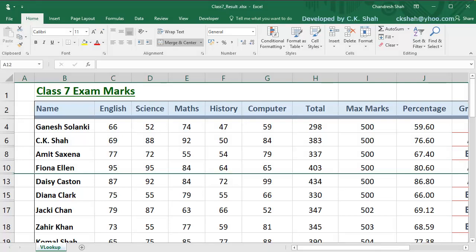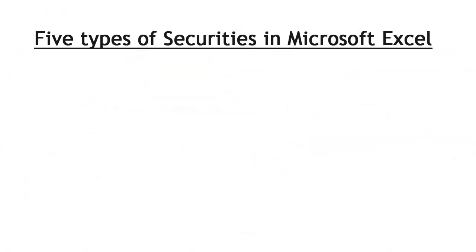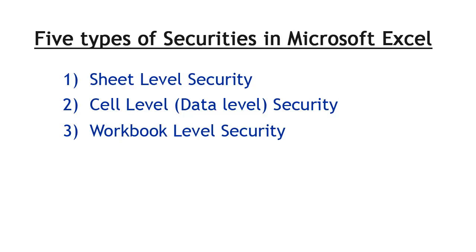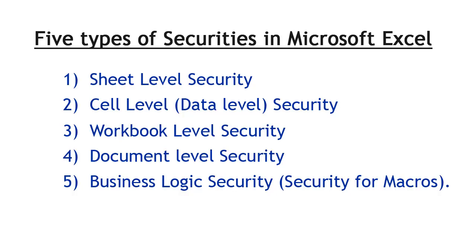The reason behind this threat is that even though there are enough security options available in Excel, normal users don't know the security features offered by Excel. So today in this video, we are going to cover all security features provided by Excel. There are five types of securities in Microsoft Excel: sheet level security, cell level security, workbook level security, document level security, and business logic security. We will be covering all these aspects in this video.